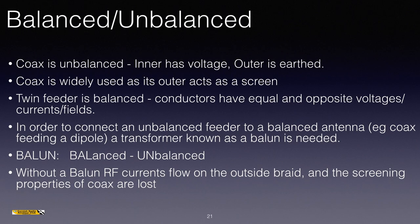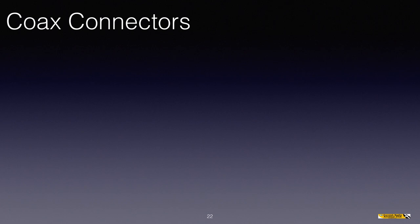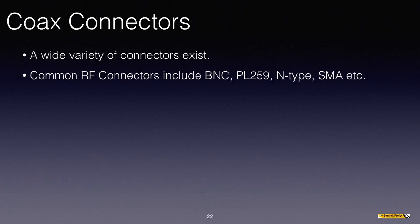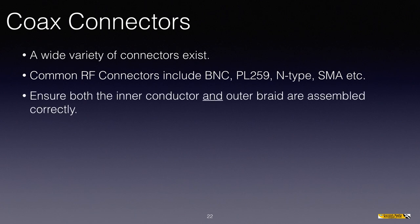Let's have a look at the two coaxial connectors. A wide variety of connectors exist. Common RF connectors include BNC, PL259 — those two we need to recognise — but also N-type, SMA, etc. Each one has its advantages and disadvantages, but the more expensive ones tend to be for higher frequencies where we're more susceptible to loss with poor quality connectors. Ensure both the inner conductor and outer braid are assembled correctly. The continuity of the inner conductor and the braid are absolutely essential for the correct operation of coax.